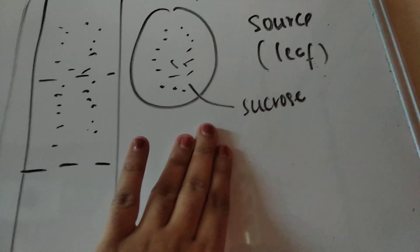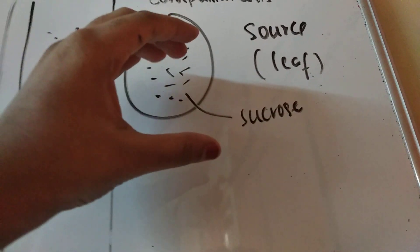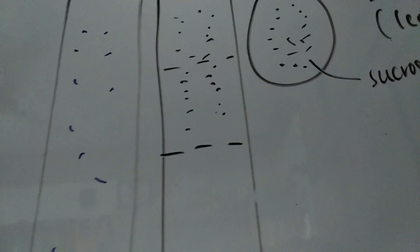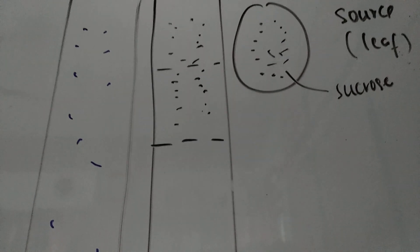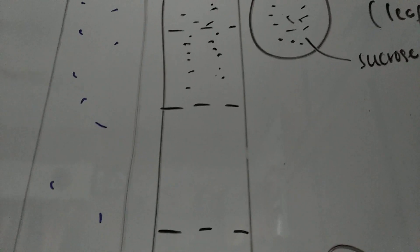So since it is already high and it's higher than the companion cell, if you want to put this freshly synthesized sucrose into this, where this is low concentration and this is high concentration, you need to use active transport.